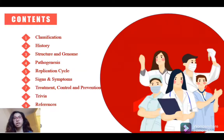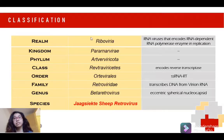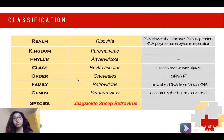Let's start first with the classification. JSRV is under realm Riboviria, which means it is an RNA virus. Next rank is kingdom Pararnavirae, phylum Artverviricota, and class Revtraviricetes, known to include reverse transcriptase. The order is Ortervirales — these are single-stranded RNA viruses that replicate through DNA.